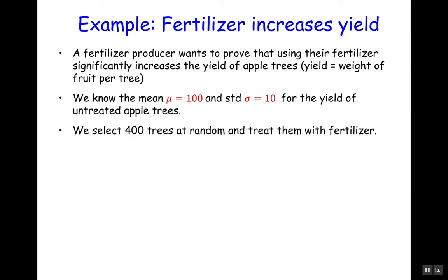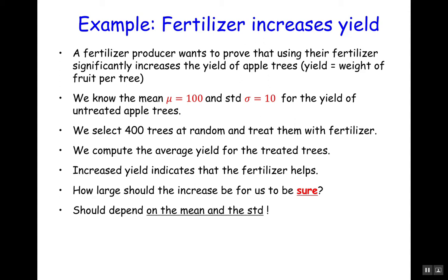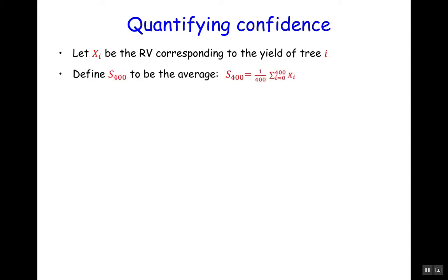We select 400 trees at random and treat them with fertilizer. We compute the average yield of the treated trees, and if this yield is larger than 100, that shows that the fertilizer helps. But how large should this increase be for us to be sure, or sure with high probability? This has to depend on the mean and standard deviation. Suppose xi is the random variable for the yield of tree i, and let S400 be the average yield of the 400 treated trees.